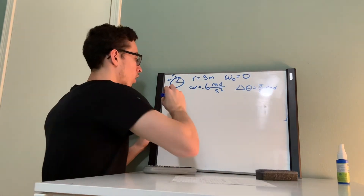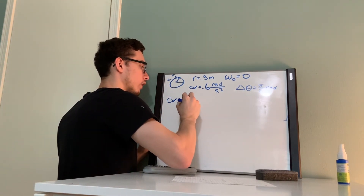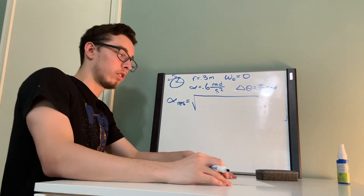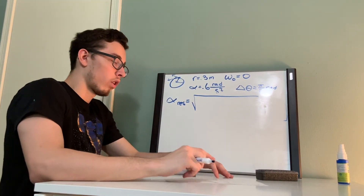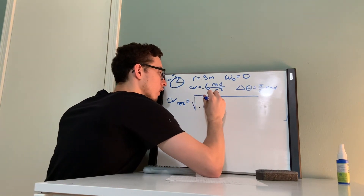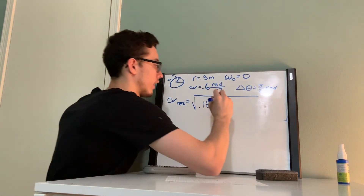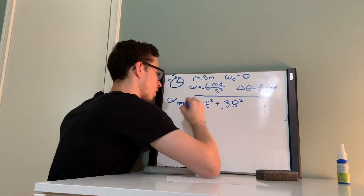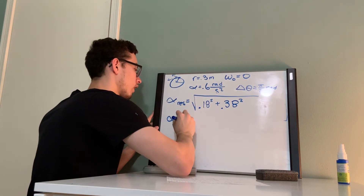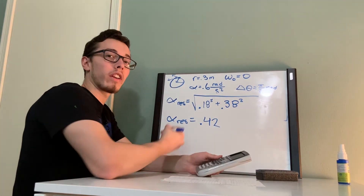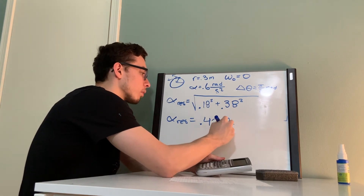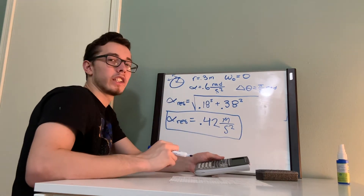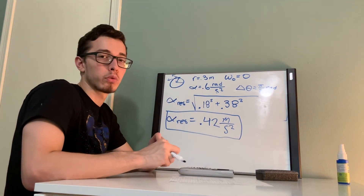Now our resultant acceleration uses the same formula: square root of tangential squared plus radial squared. That's the square root of 0.18 squared plus 0.38 squared. Plugging this into the calculator, we get a value of 0.42 meters per second squared. Now let's do the last part, Part C, at 120 degrees.